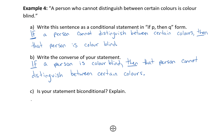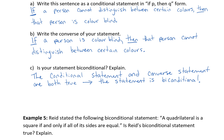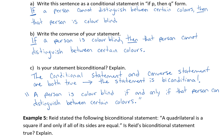Now we can write it as a bi-conditional statement. Remember, when writing the bi-conditional statement we use 'if and only if' from the original conditional statement. So: a person is colorblind if and only if that person cannot distinguish between certain colors.